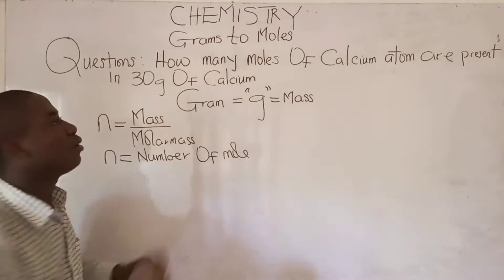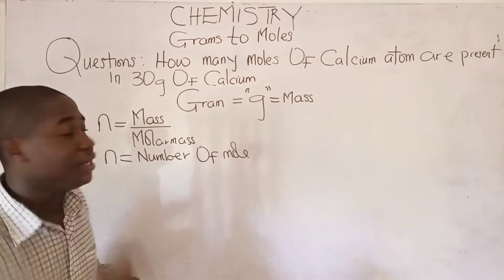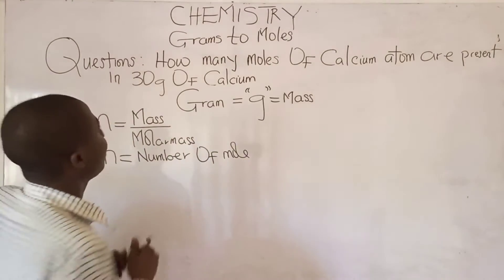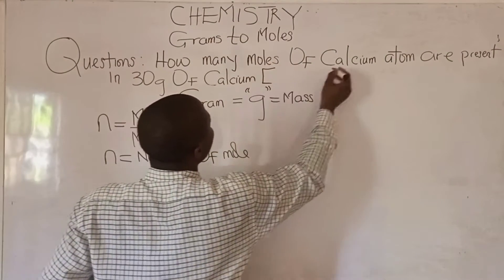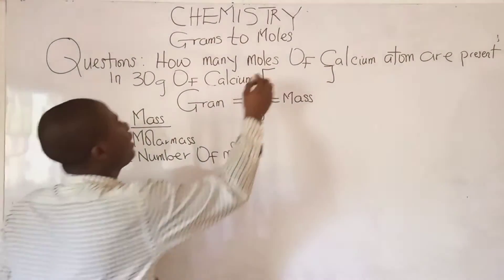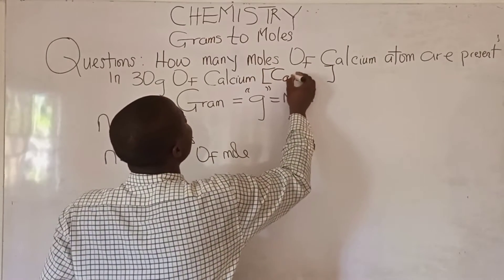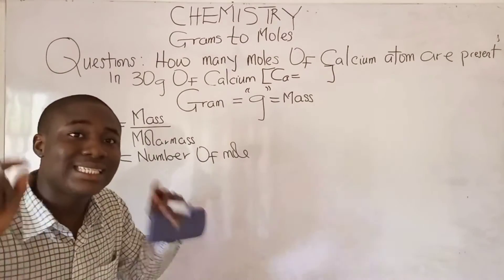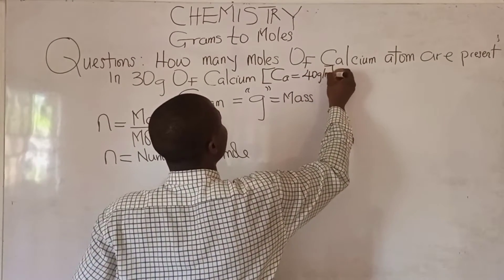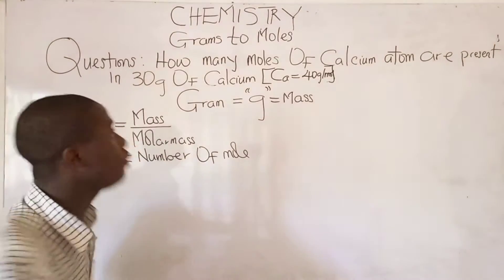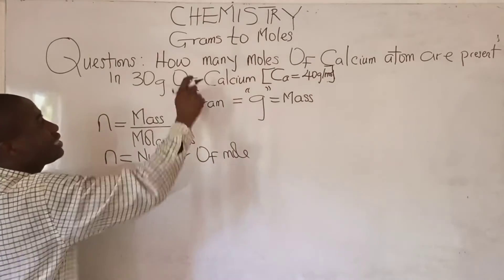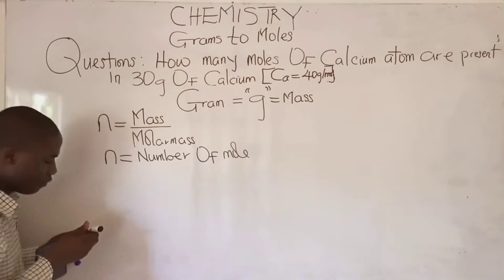Now let's quickly solve the first question written on the board. The question says: how many moles of calcium atom are present in 30 grams of calcium? The molar mass is 40 grams per mole. The question is asking us to calculate the number of moles of calcium atom present in 30 grams of calcium, and we already know the formula to apply.